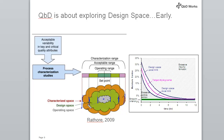Finally, there is the characterization range — we studied even further out than our acceptable range, up to where it failed. We've done studies to this point and we know what happens if we go outside, but that would not be acceptable.